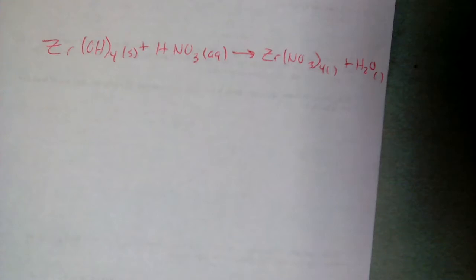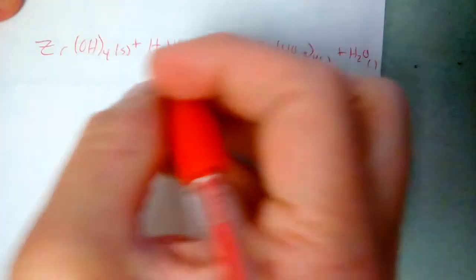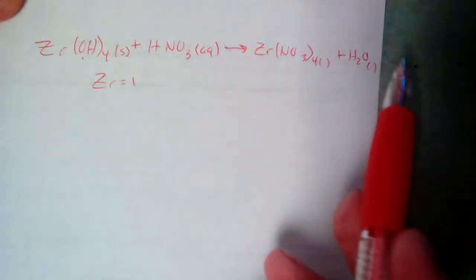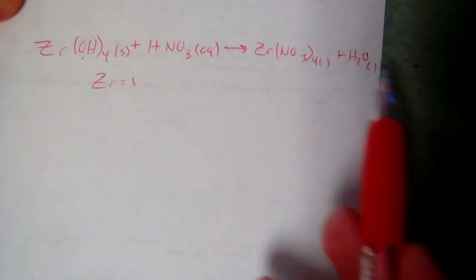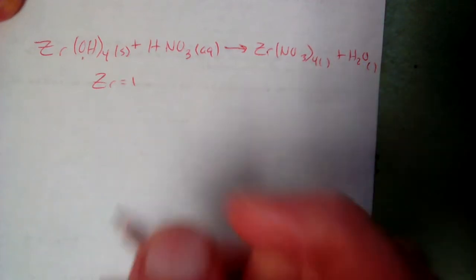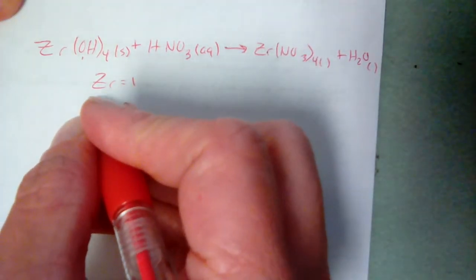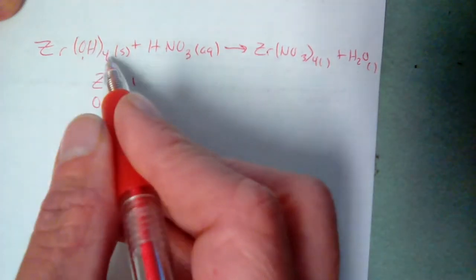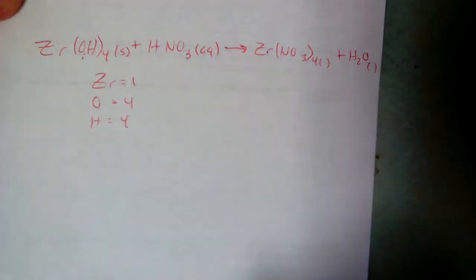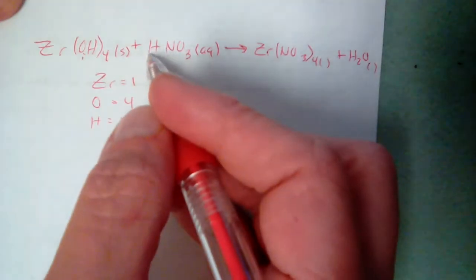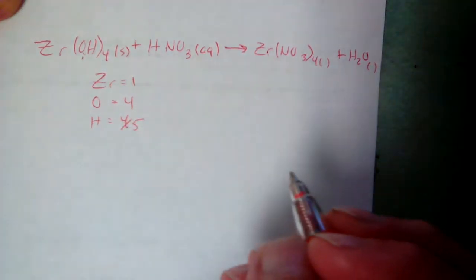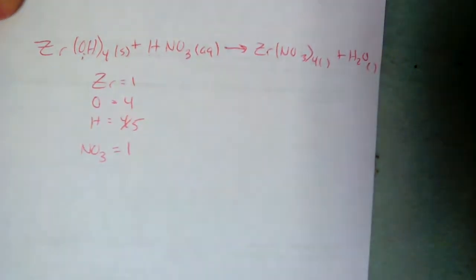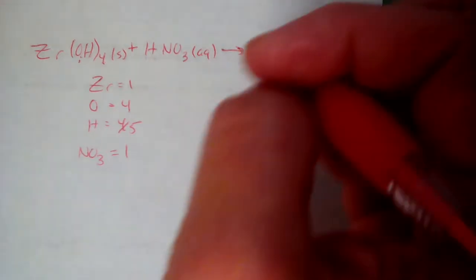This equation needs to be balanced. There is one zirconium on the left. Hydroxide has 4 oxygens and 4 hydrogens (1×4 each), and there's another hydrogen from nitric acid, giving 5 hydrogens total. Nitrate is NO3⁻. On the right side we have one zirconium, two hydrogens in water, and four nitrates — so we need to balance.